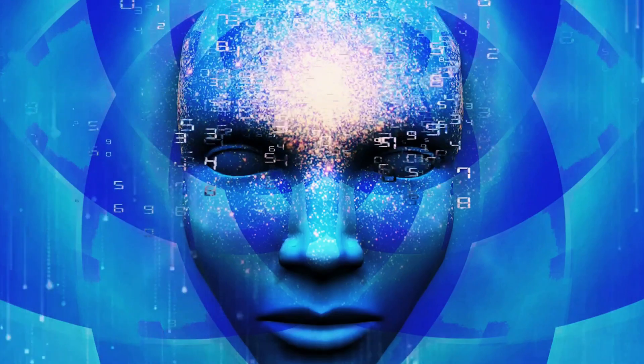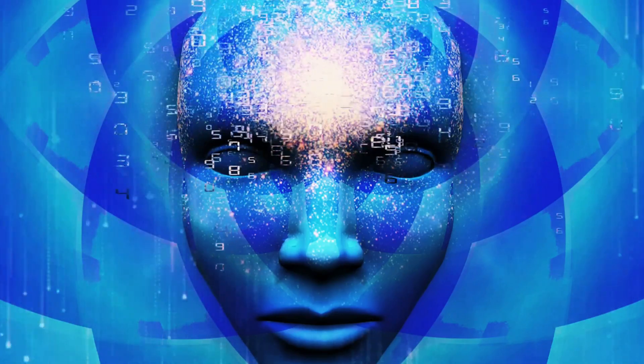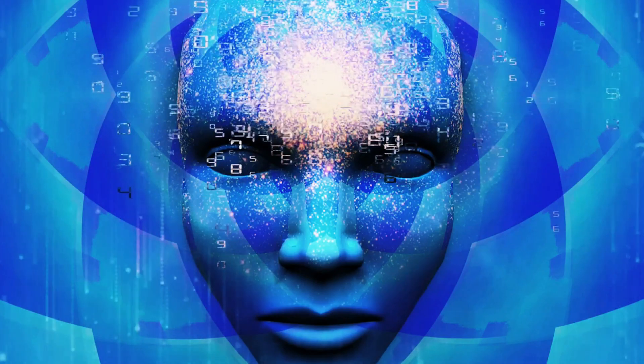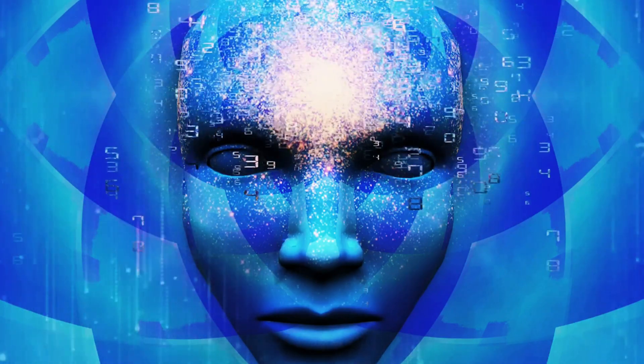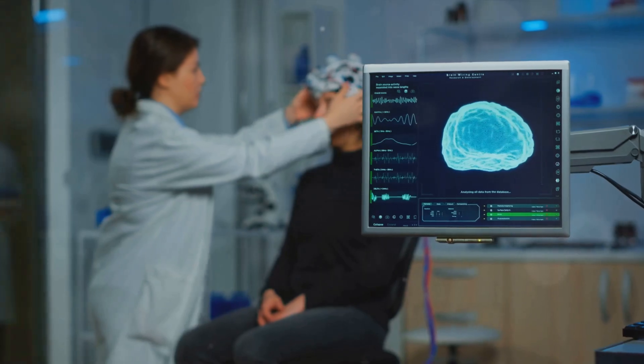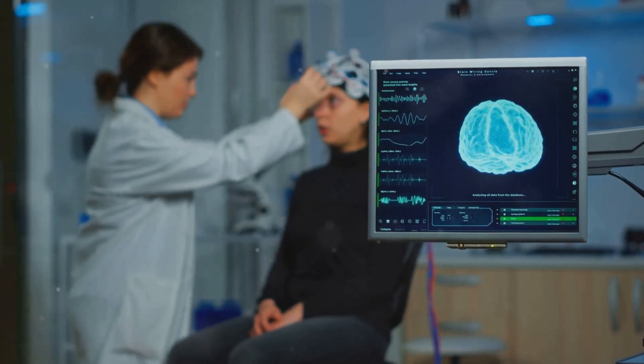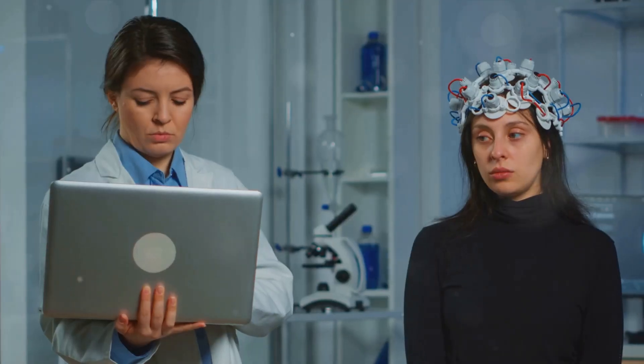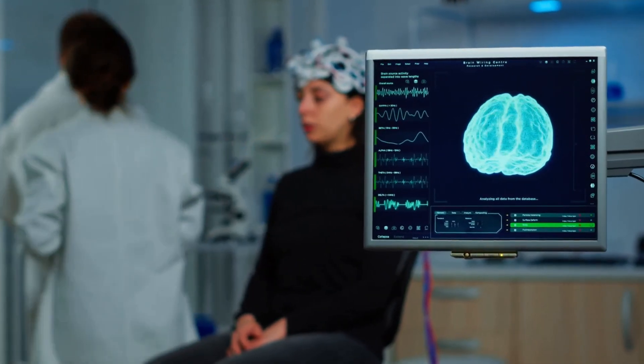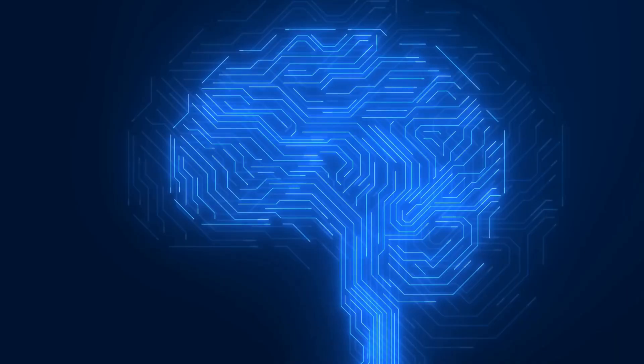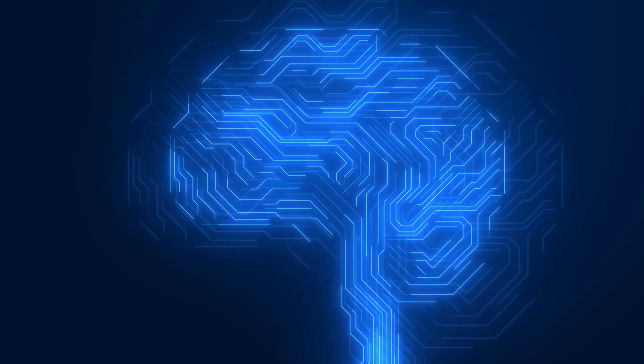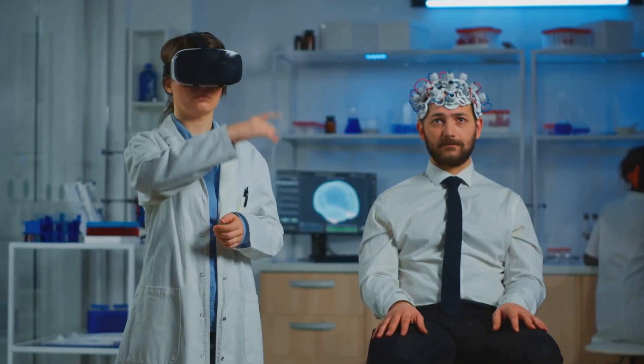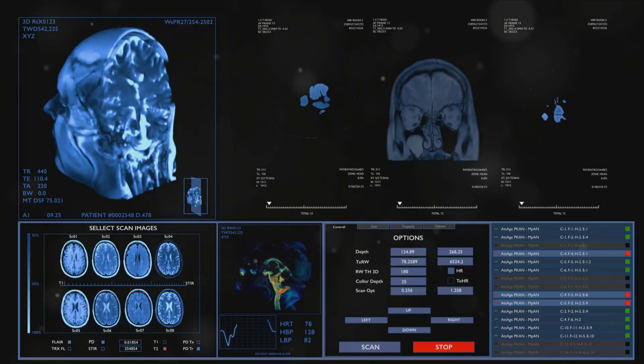As we gaze into the future, we can't help but question, what could be the impact of Neuralink on our society? The potential of Neuralink's technology is vast and could revolutionize the treatment of neurological disorders such as paralysis, Parkinson's disease. However, with great power comes great responsibility. The ethical and societal implications of widespread use of brain-computer interfaces are immense. Will we be able to ensure privacy and security in a world where our brains are connected to machines? Will this technology be accessible to all, or will it create a new divide between the haves and the have-nots?